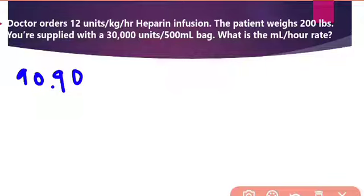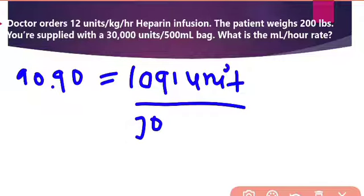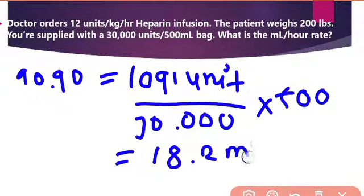If 1 kg requires 12 units, then 90.90 kg requires approximately 1,091 units per hour. This is our desired amount. The amount on hand is 30,000 units and the volume is 500 ml. When we calculate, we get approximately 18.2 ml per hour. So we start the heparin infusion at 18.2 ml per hour.